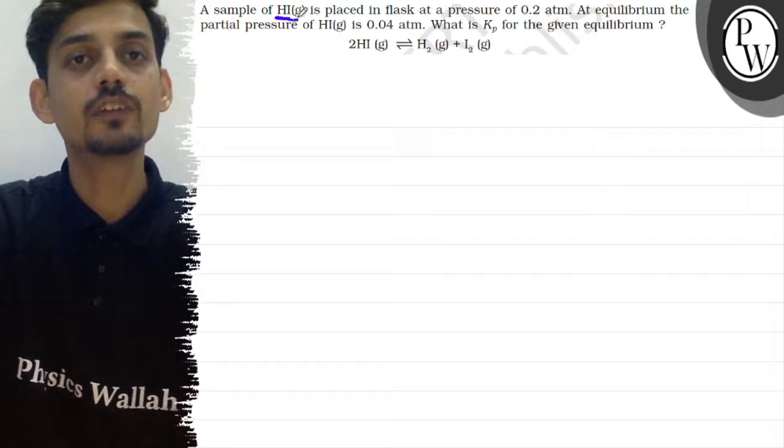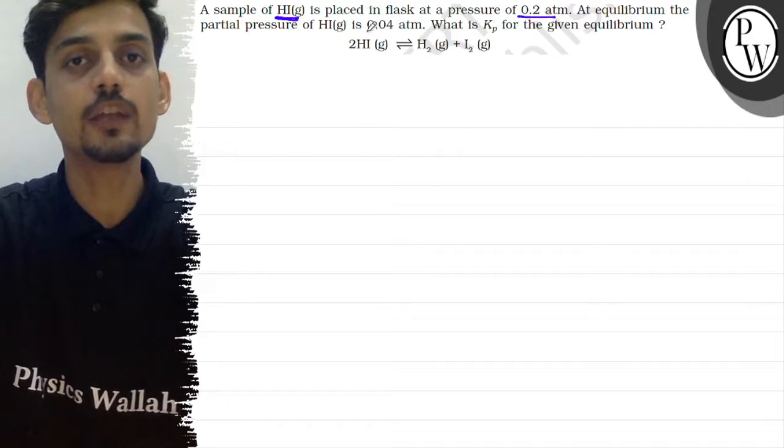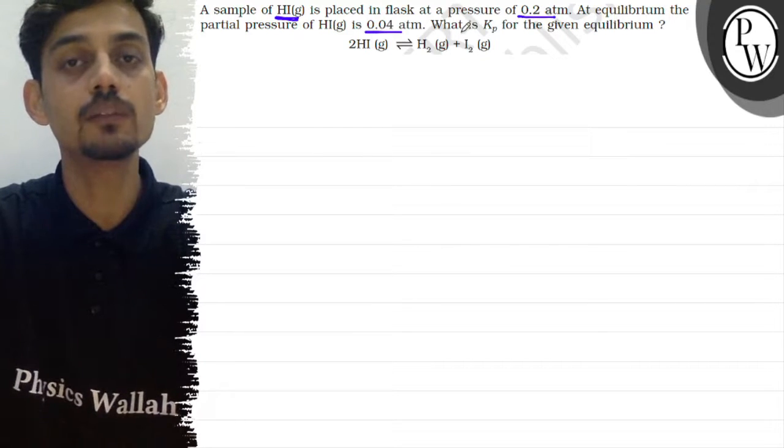Hello. The question says a sample of HI gas is placed in a flask at a pressure of 0.2 atm. At equilibrium the partial pressure of HI is 0.04 atm.